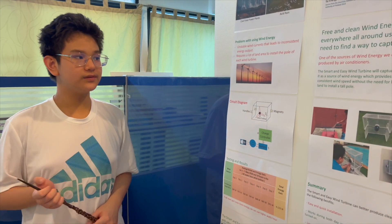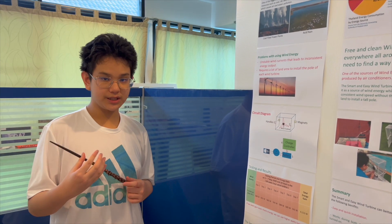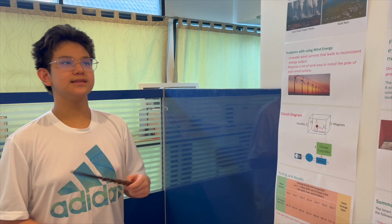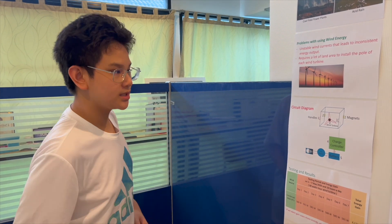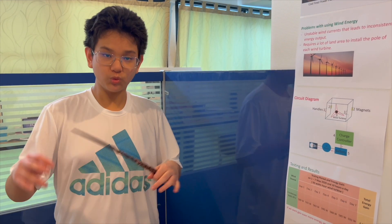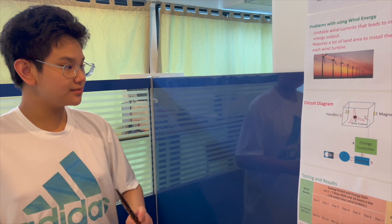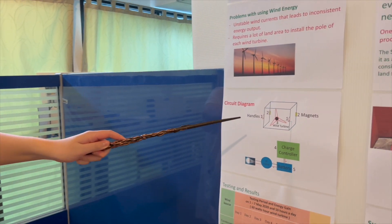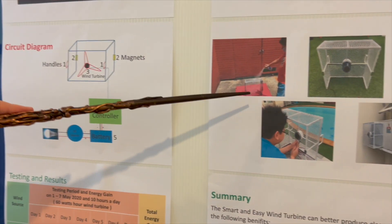And one of the biggest wasted sources of clean energy, specifically wind energy, is the excess waste produced by air conditioners. My invention will capture this excess waste and turn it into electricity. Here's the circuit diagram of my invention, and here's me working on my invention.